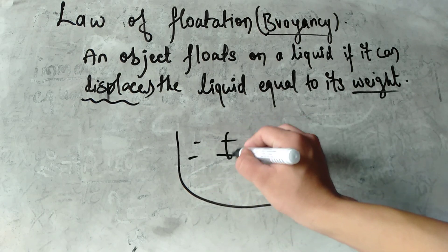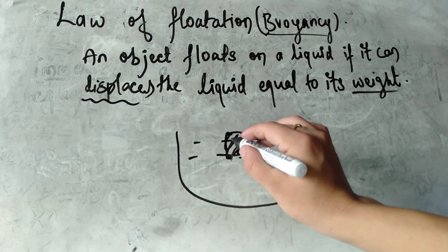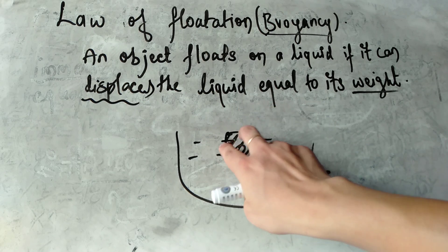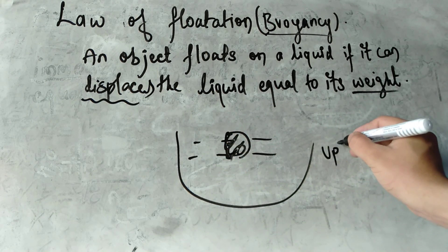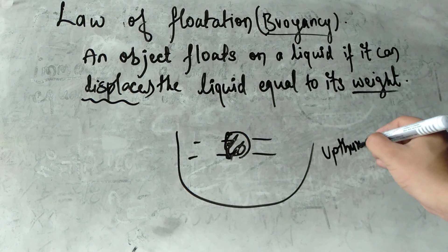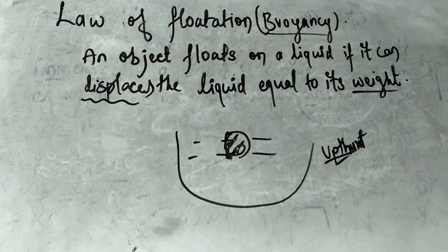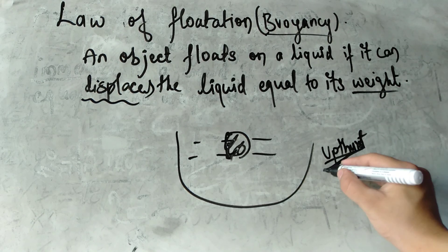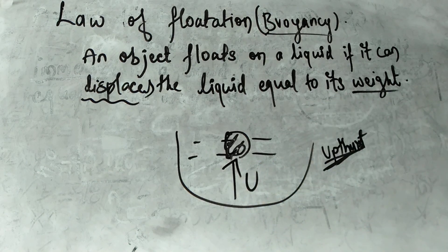When an object is in liquid, and the liquid is fixed, the upthrust is equal to the weight of the liquid displaced. That is equal to its upthrust — this is the Archimedes principle. Now the law of flotation is very important: this is the upthrust.